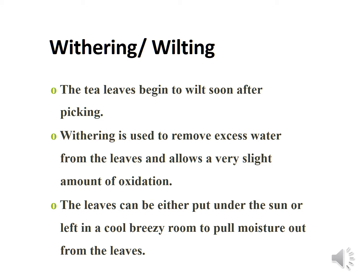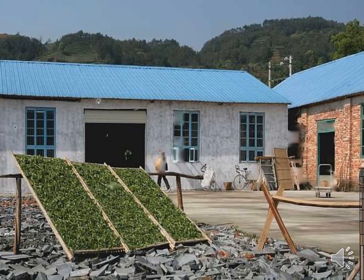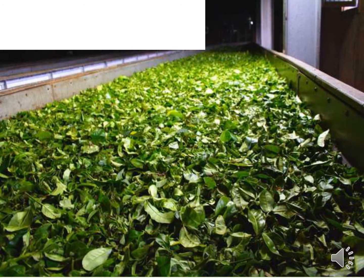Withering is done by leaving the leaves in the sun or in a cool breezy room, so that moisture is removed. As you can see in the image, both methods are used — sun drying or a cool breezy indoor room.